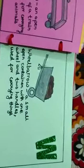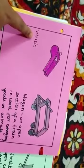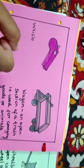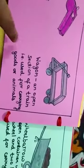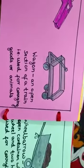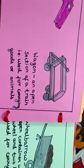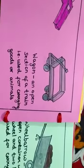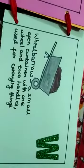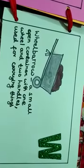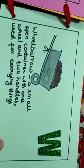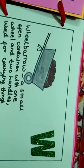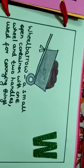The next alphabet is W. The first word from W is whistle. The second is wagon, that is an open section of a train used for carrying goods or animals. And the third is wheelbarrow, that is a small open container with one wheel and two handles, used for carrying things.